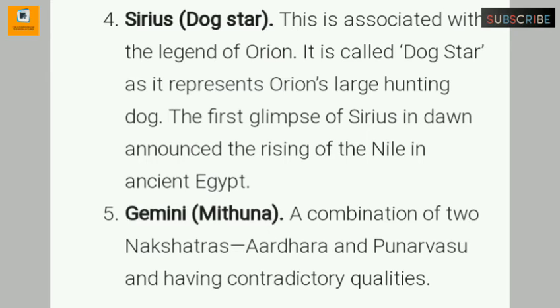Number five: Gemini — Mithuna. This is a combination of two nakshatras, Ardra and Punarvasu, having contradictory qualities.